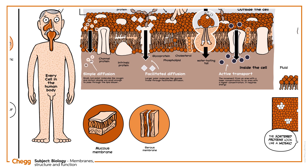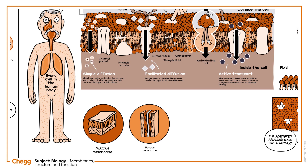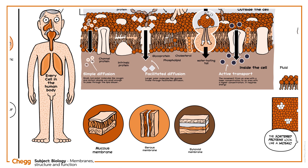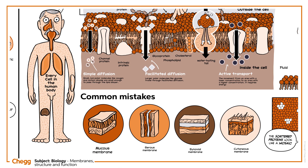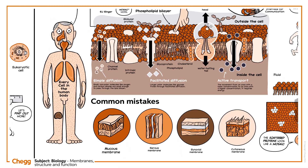Serous membranes, like those in the inner walls of the lungs, secrete fluid to allow sliding between surfaces. Synovial membranes line joints. And cutaneous membranes are quite simply skin. Although they have similar roles as selective barriers, these membrane tissues should not be confused with the plasma membranes, which exist on a smaller subcellular scale.